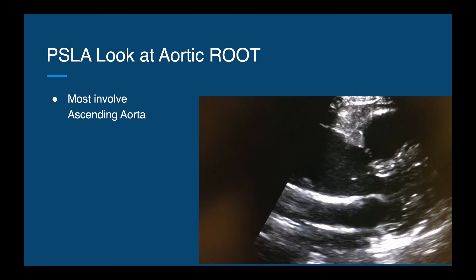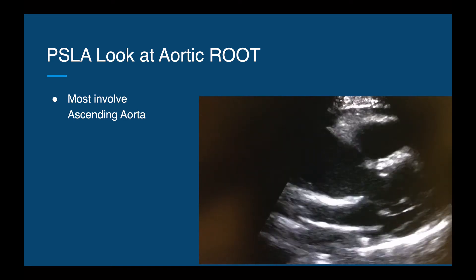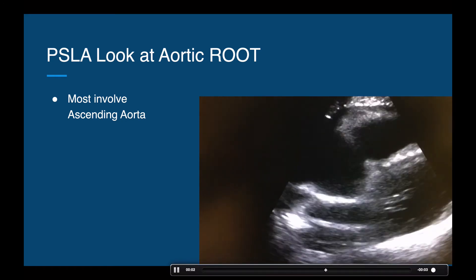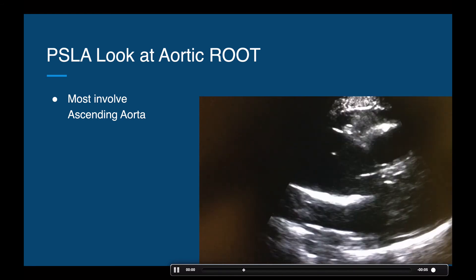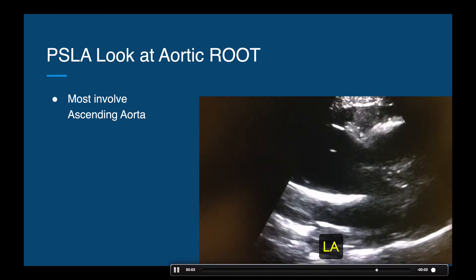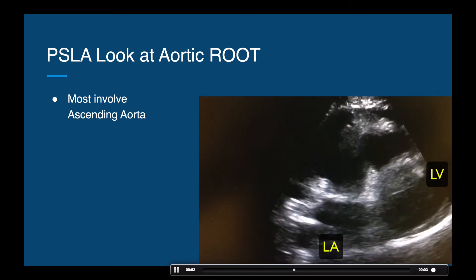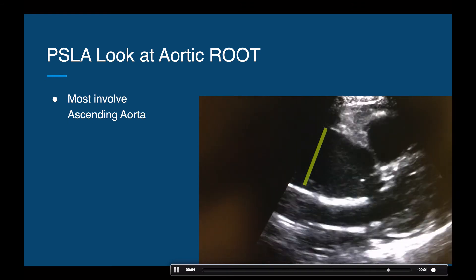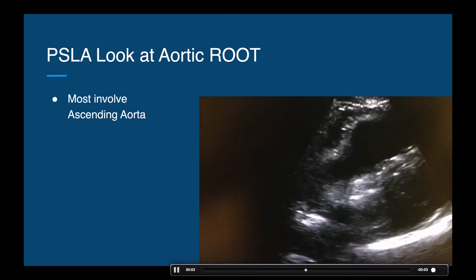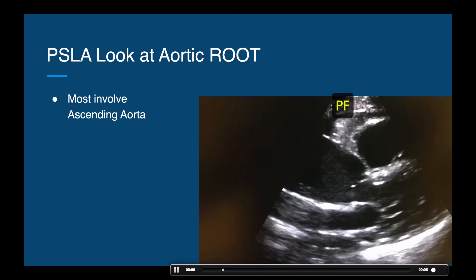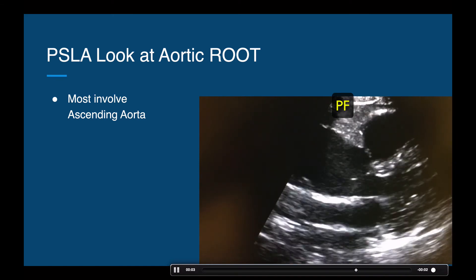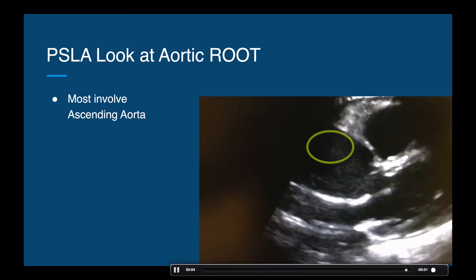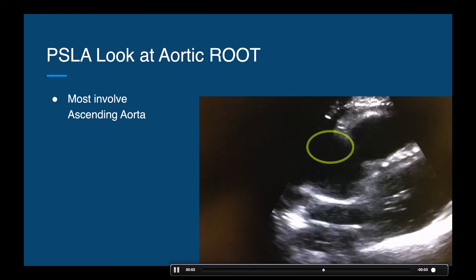Most dissections occur around the aortic root, so we usually start with a parasternal long axis view of the heart. Here we see the left atrium, the left ventricle with the mitral valve, the aortic valve, and a dilated aortic root — the root should be about the same size as the left atrium. We also see pericardial fluid or blood, which makes us very concerned, and then a flap that does not involve the aortic valve — making us think we are dealing with a very deadly dissection.